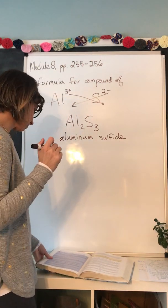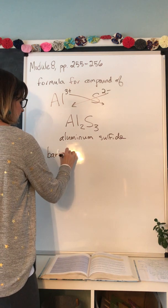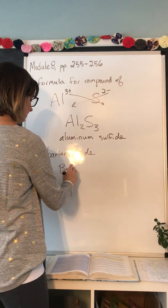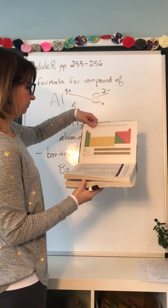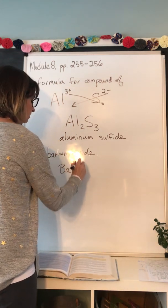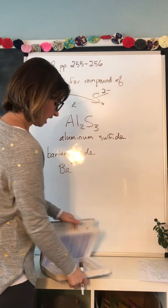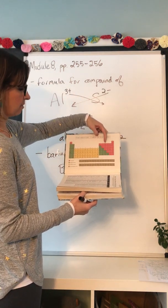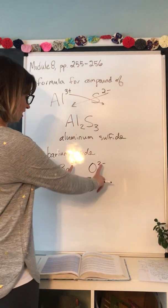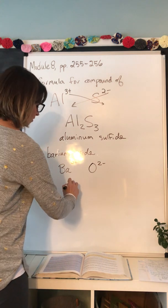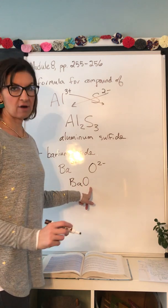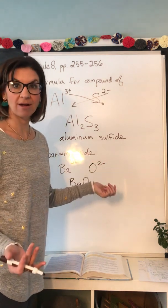The next example asks for the chemical formula for barium oxide. Barium (Ba) is in column 2A, so it has a 2+ charge. Oxide refers to oxygen, which is in the 2- column. Since both charges have the same numerical value (2+ and 2-), they cancel each other out — the subscripts are both one and can be ignored. So the formula is BaO.